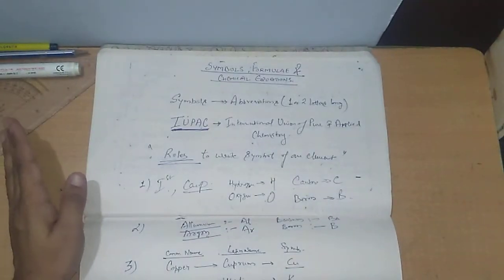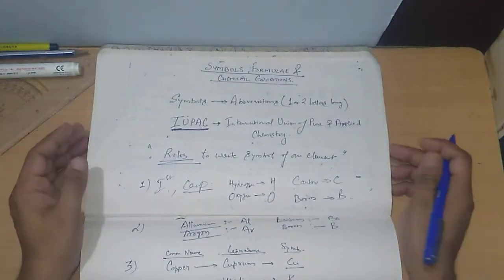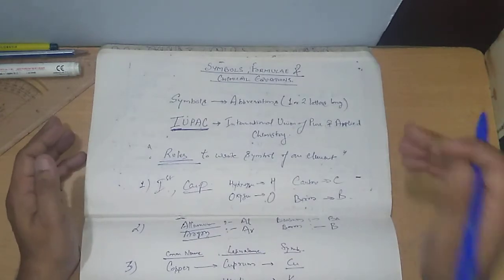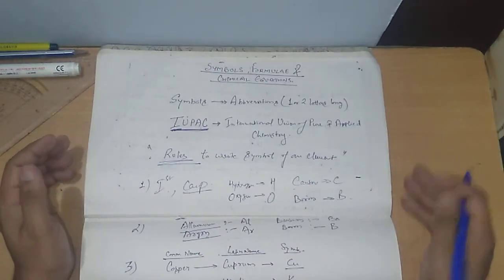The first rule is that the first letter of the element's name, written in capital, is considered its chemical symbol. The next rule says that if more than one element starts with the same letter, we take a second letter in small case as part of the symbol. So a symbol can be one or two letters — if one letter, it is always a capital; if two letters, the first is capital and the second is small.